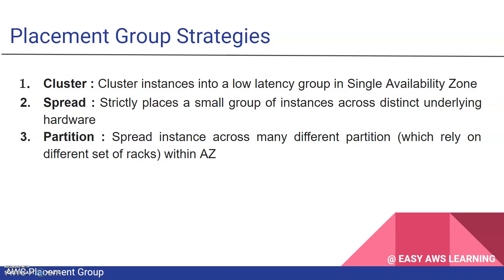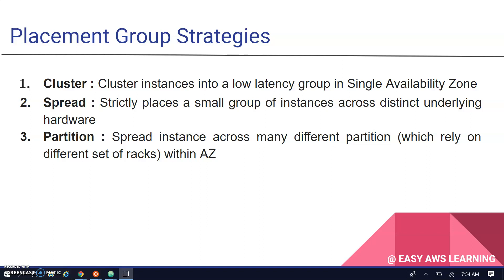The last type is partition. Partition spreads instances across many different partitions. AWS creates different partitions and your instances are placed based on your placement group following one partition, which relies on one set of racks. One rack holds one partition within an availability zone. Instances in one partition do not share the underlying hardware with instances in another partition — that's the key point for partition.